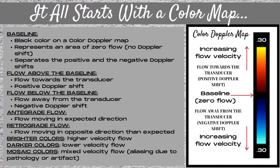Brighter colors on the color Doppler map represent higher velocity flows. Darker colors are lower velocity flow. Mosaic colors — these are all the mixed colors on a color Doppler map — show mixed velocity flow and represent aliasing due to pathology or artifact. Note that color Doppler cannot determine the exact velocity of flow; rather, it's a range of velocities, represented by the velocities listed on the top and bottom of the color Doppler map.